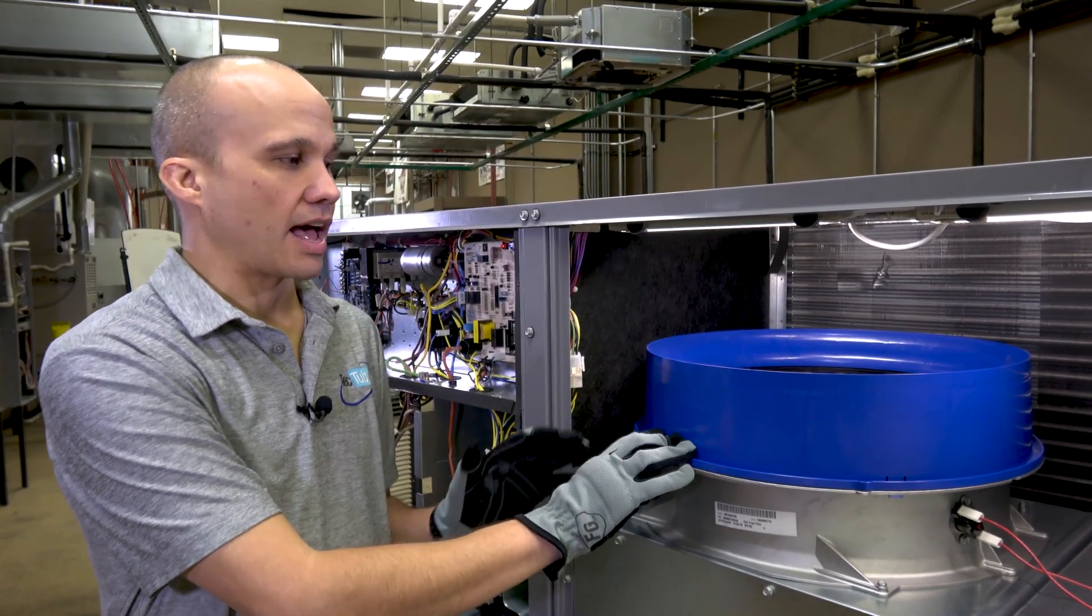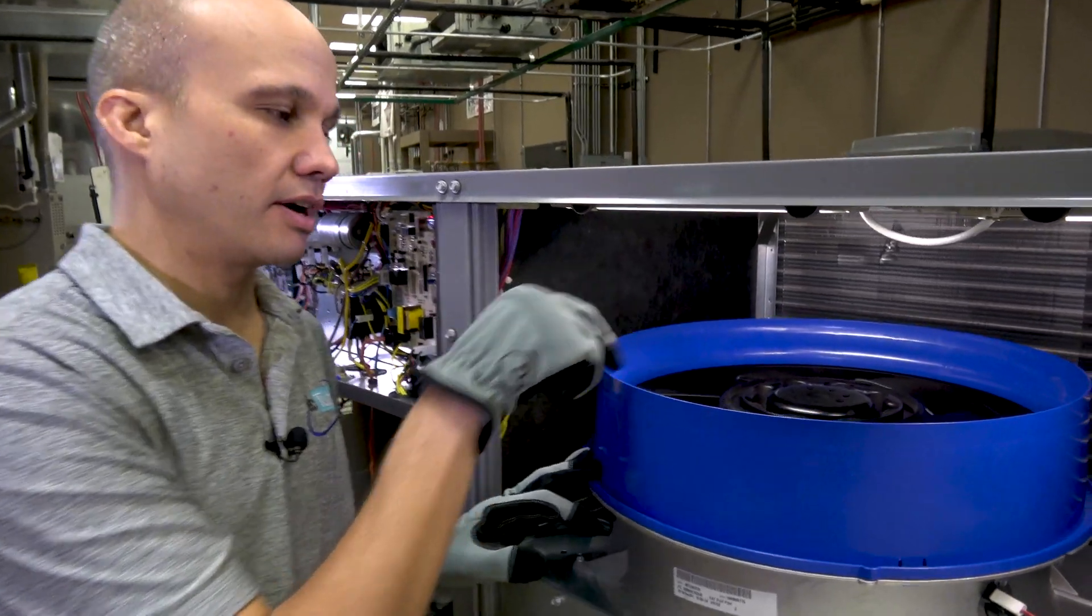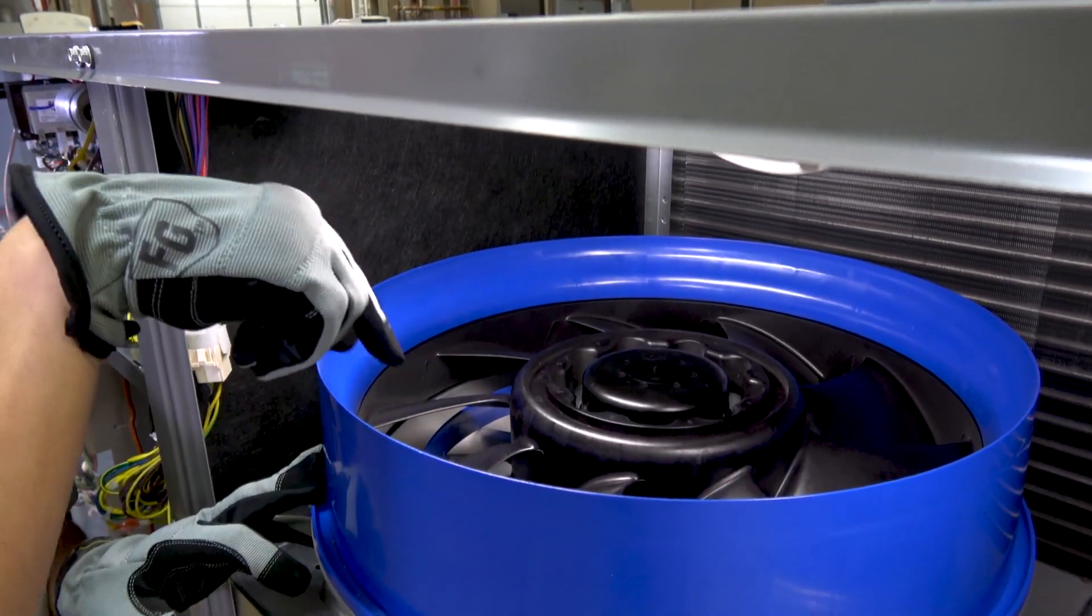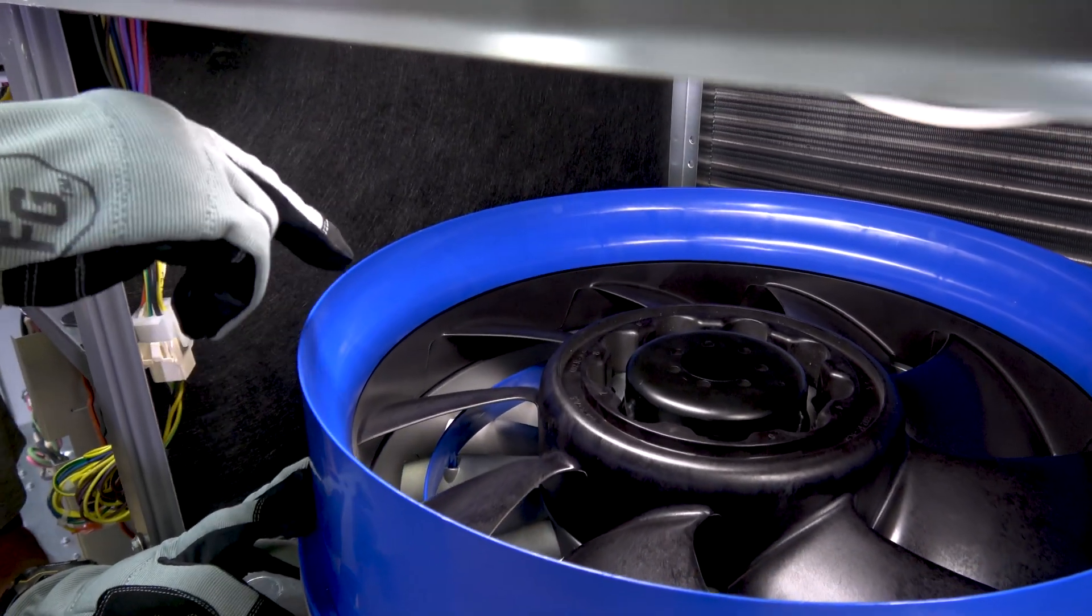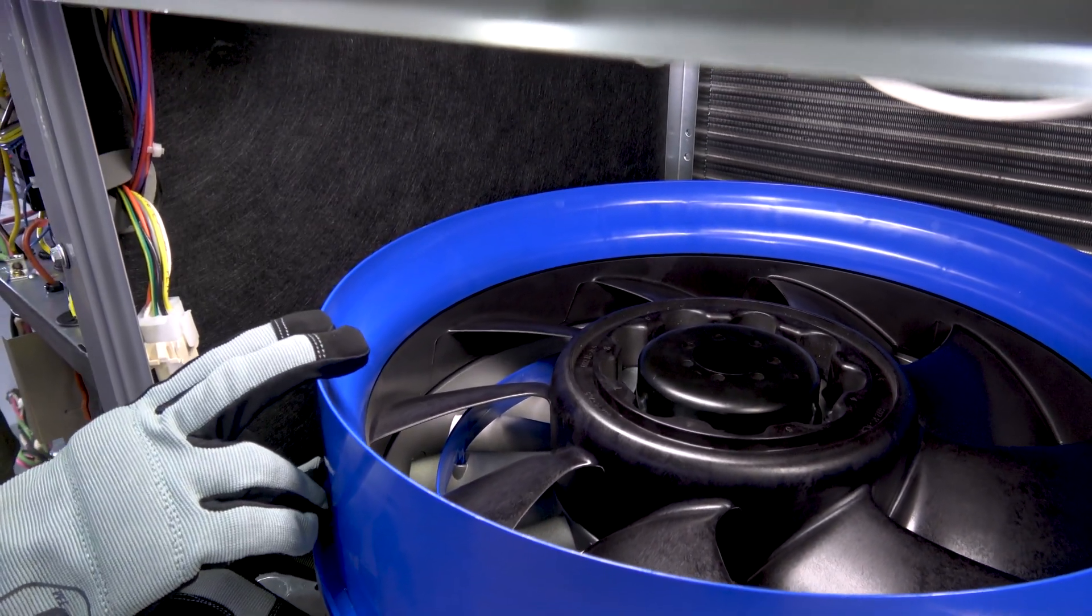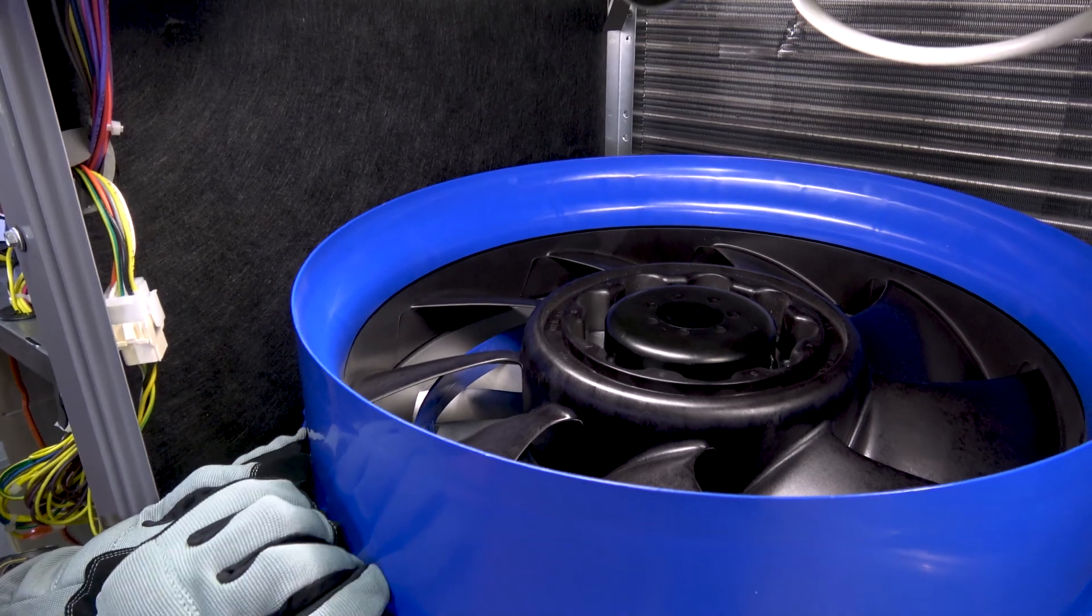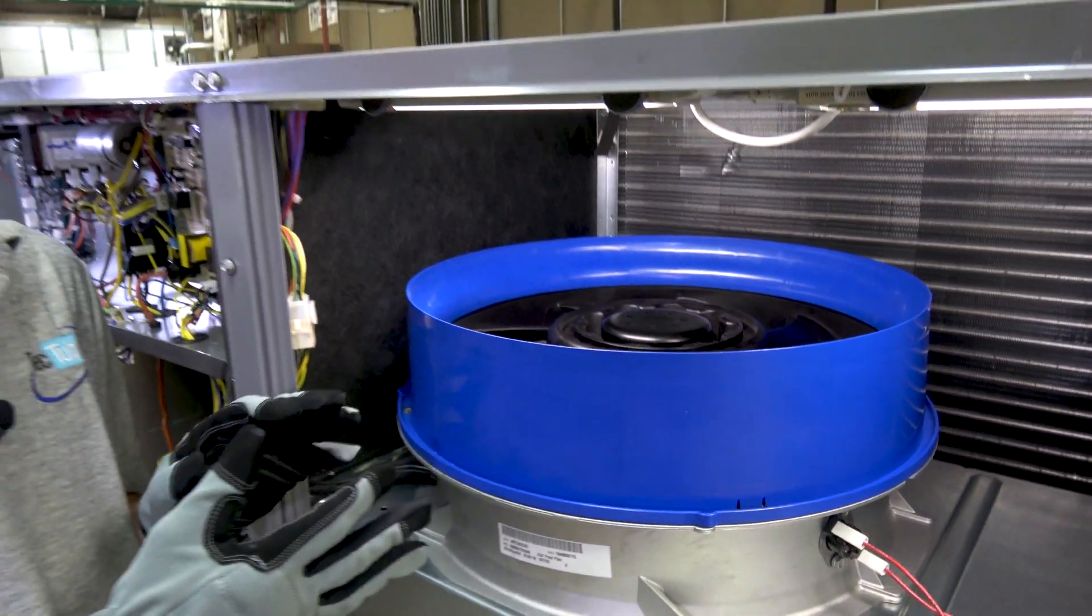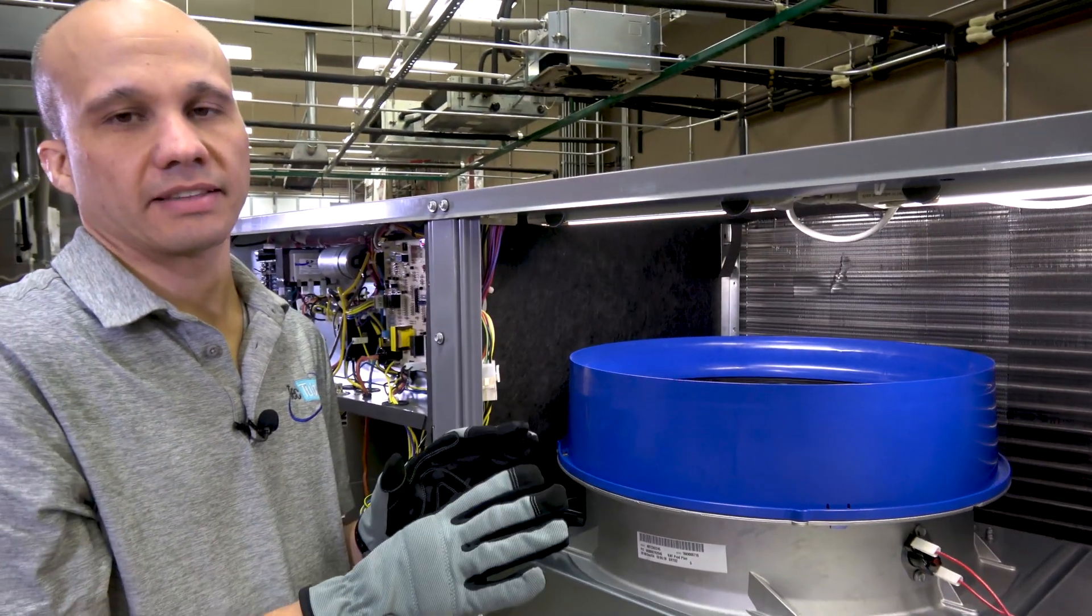This is also going to have a totally different design. If you look up top, we actually have our blower wheel in black. And if you could see down there that silver color, that's actually the stator. Together, they work together to generate the static pressure that we need, but no belts, no shafts, no pulleys, nothing like that to mess with. We'll set up all the airflows via the communicating circuit board on this guy.